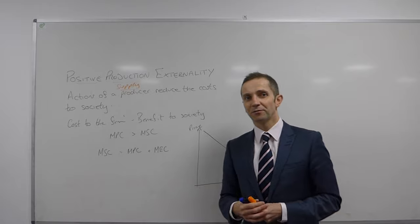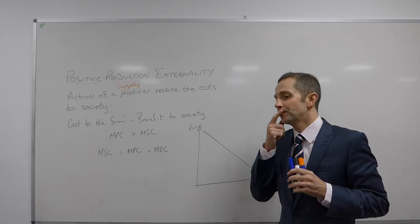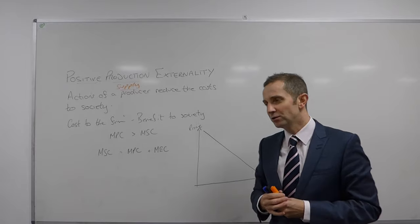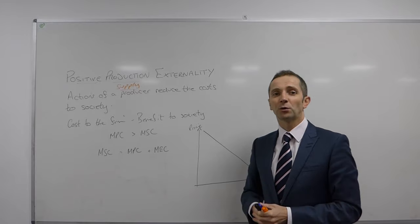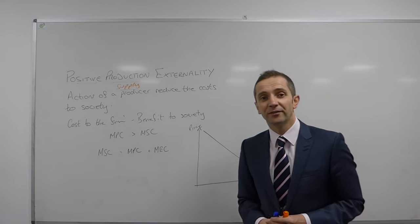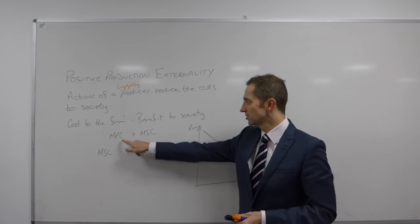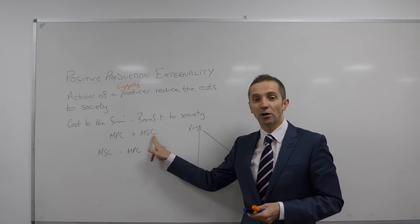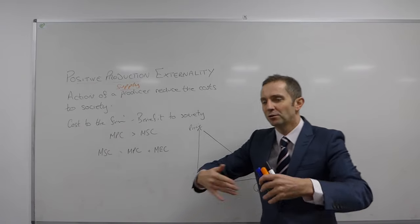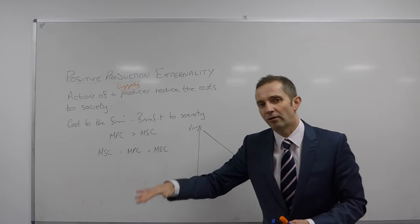When we are considering a positive production externality, we are considering the case whereby the private costs to the firm are actually quite high because of whatever it is that they are doing in their production process. But as a consequence of whatever it is that they do, this clean-up operation, there are benefits to society. There are external benefits. And as a consequence, the private costs here are higher or greater than the social costs. There is obviously a cost to the firm, but there is a benefit, there is a greater benefit to society here because the costs being imposed upon society are actually being reduced.